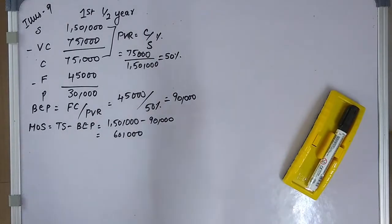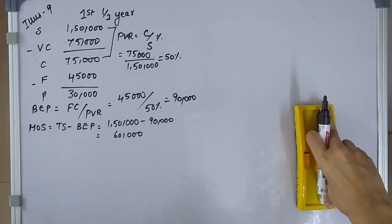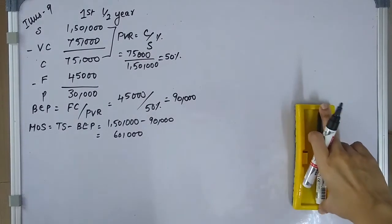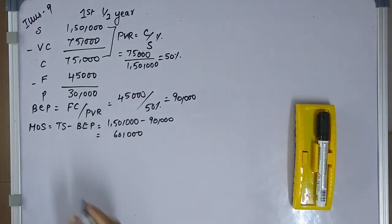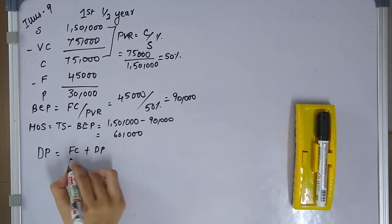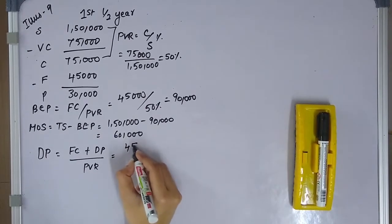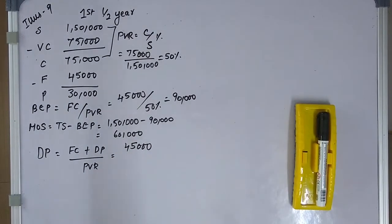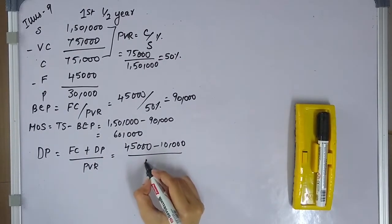Next is the expected sales volume for the second half of the year, assuming PV ratio and fixed expenses remain constant. Using the desired profit formula: sales equals fixed cost plus desired profit divided by PVR. The company projects a loss of 10,000, so desired profit is minus 10,000. Sales equals 45,000 minus 10,000 divided by 50%, which gives us 70,000.